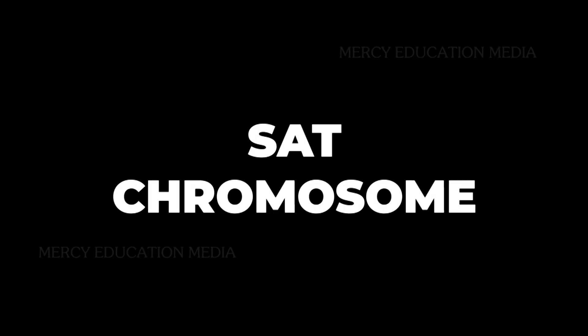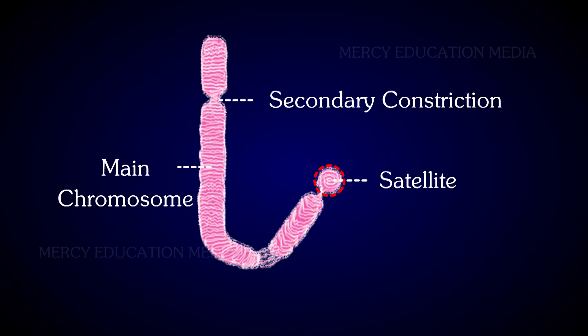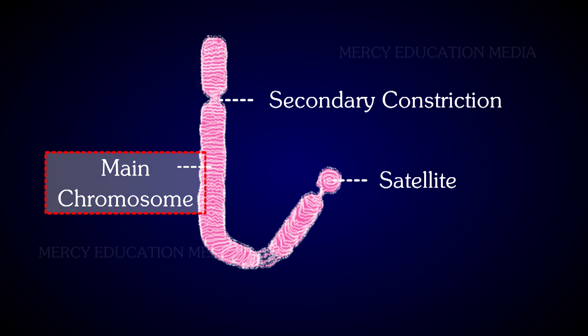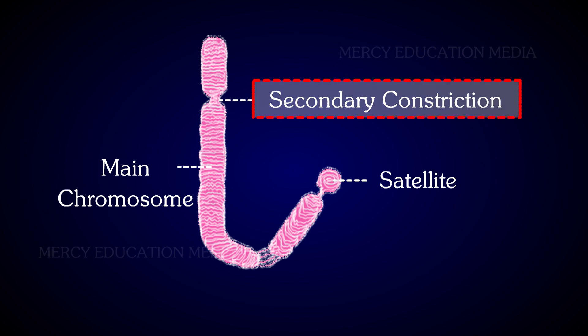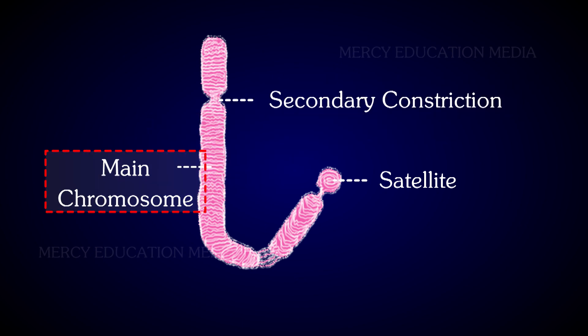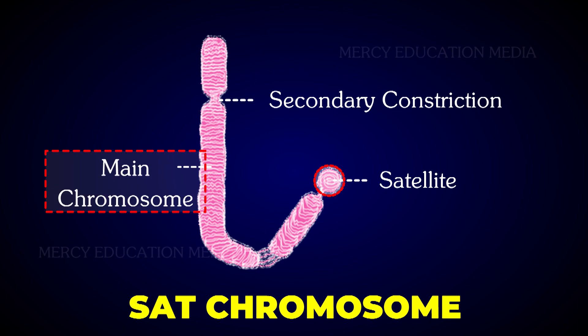What is a sat chromosome? A satellite is a short chromosomal segment separated from the main chromosome by a relatively elongated secondary constriction. A chromosome with a satellite is called a sat chromosome.